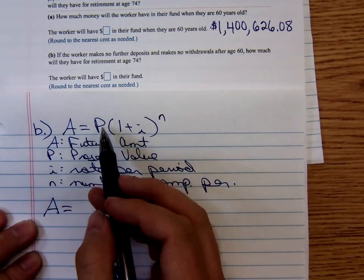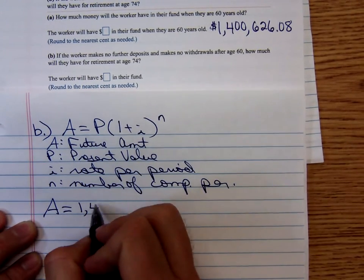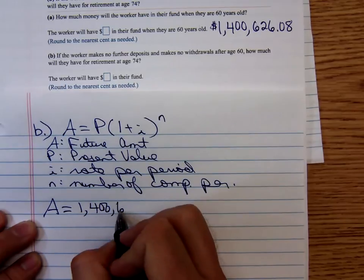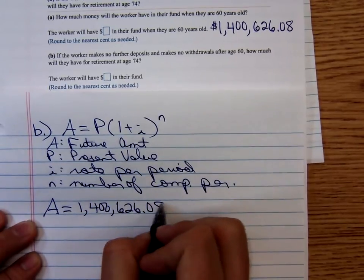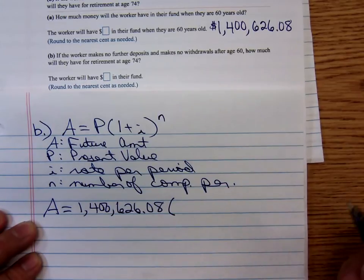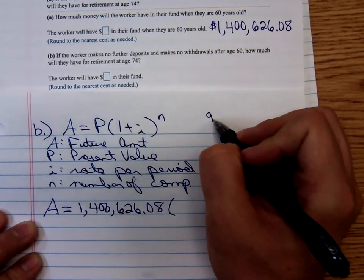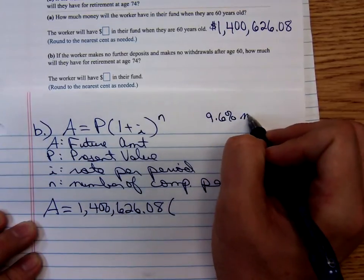The principal is that $1,400,626.08. The i value is the same interest rate, it's still that 9.6% compounded monthly.